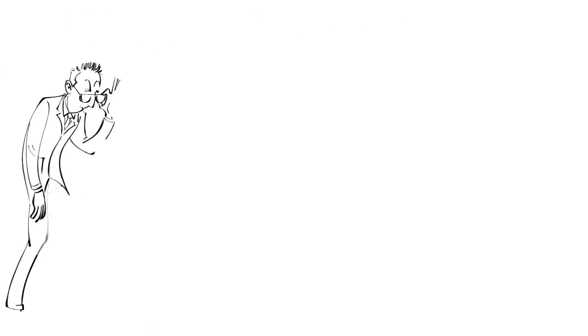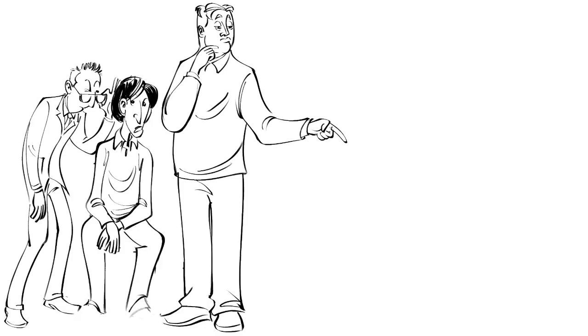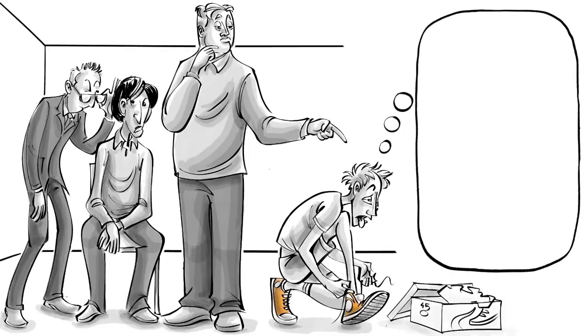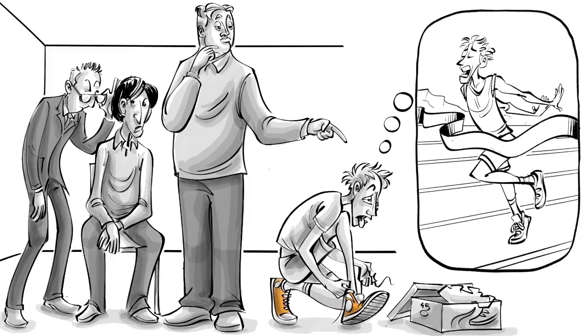Baffled by this reasoning, David Dunning and Justin Kruger, two psychologists, studied Mr. Wheeler and others like him. They came to the conclusion that people with low ability at a task tend to, paradoxically, overestimate themselves. This cognitive bias is known as the Dunning-Kruger effect.